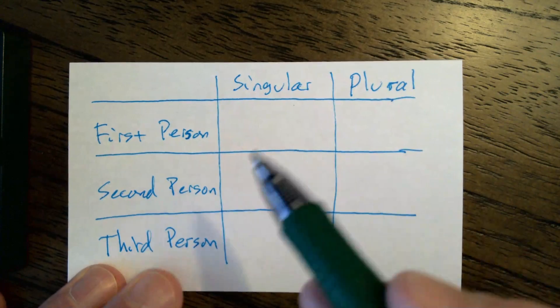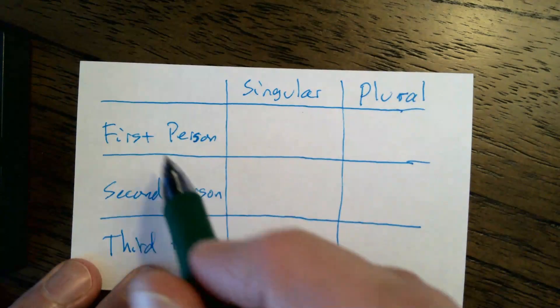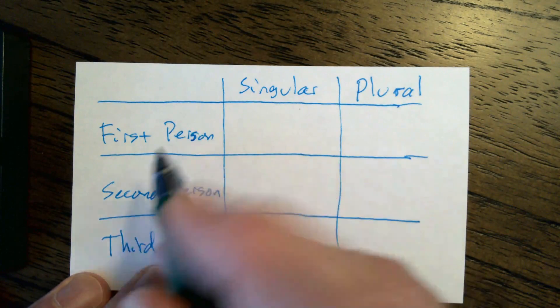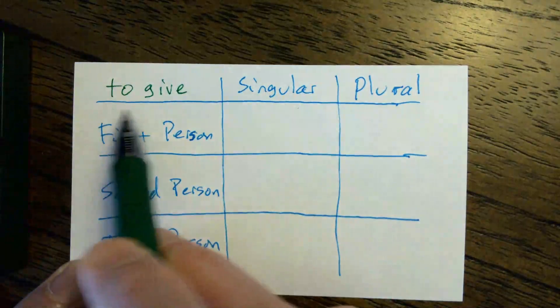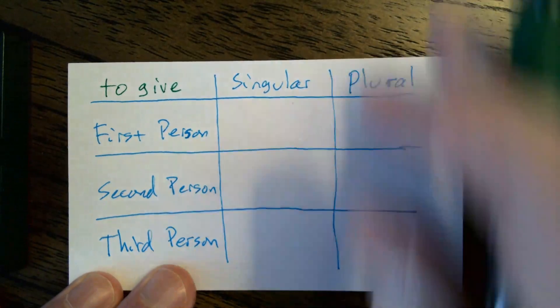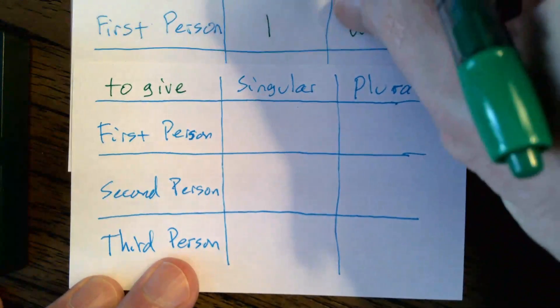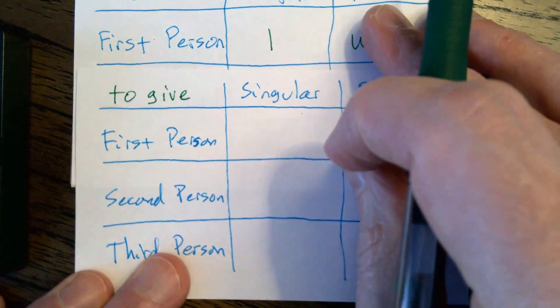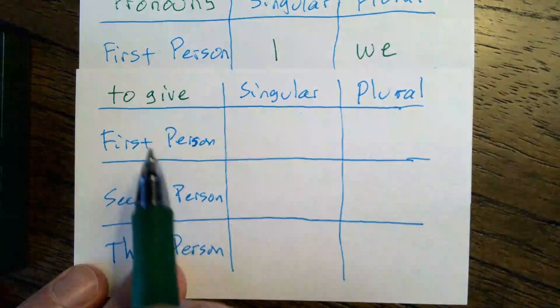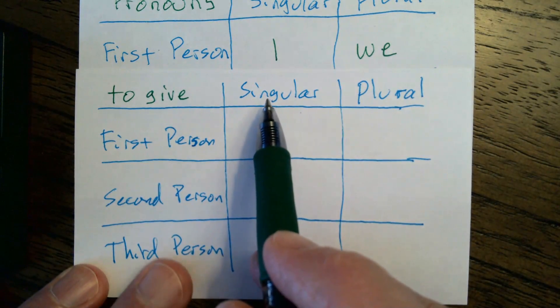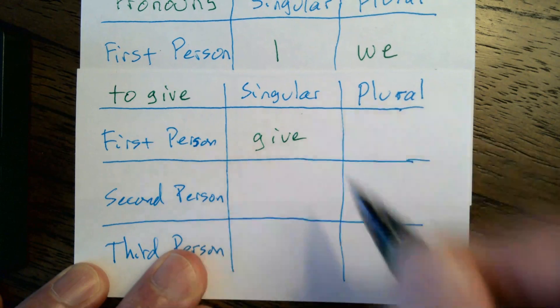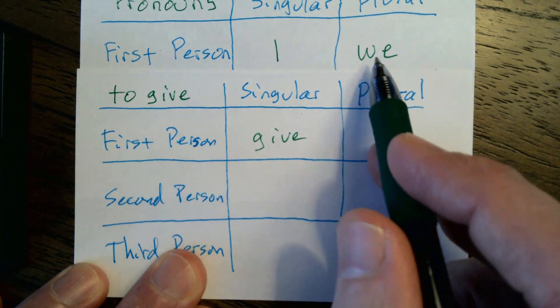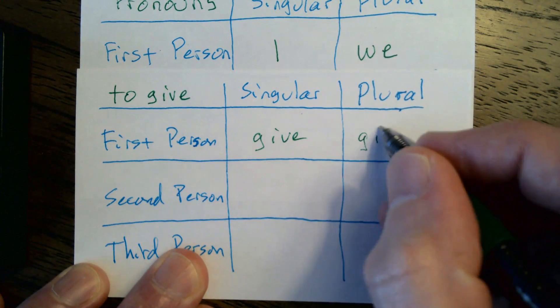Now I take my green pen. Today I want to look at the verb to give. To give. So, let's look at first person singular: I give. First person plural: We give.